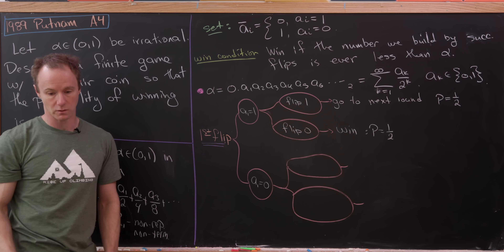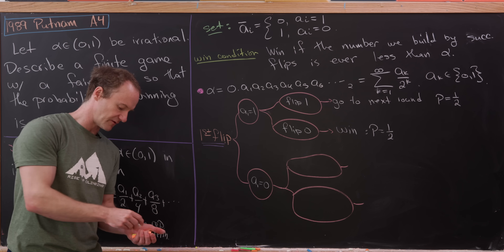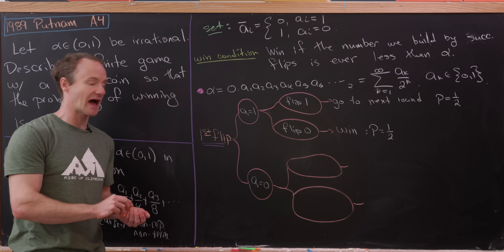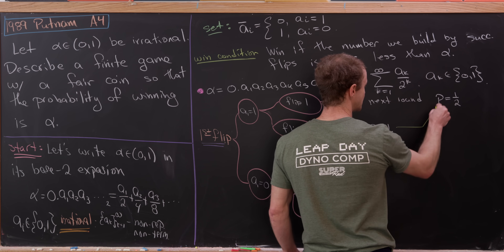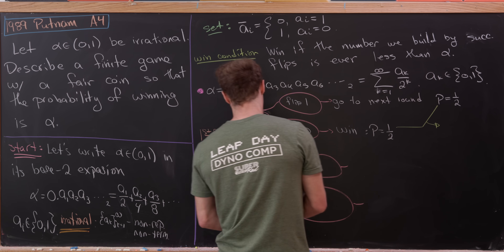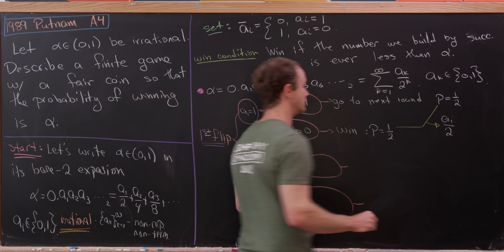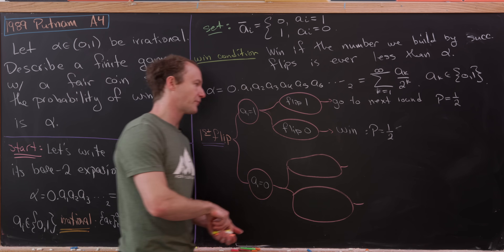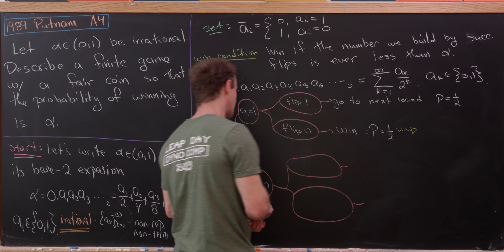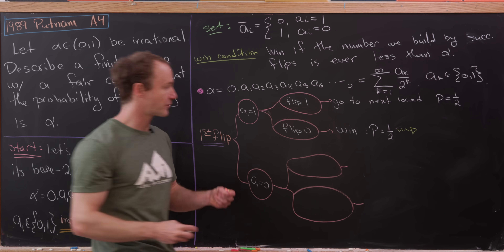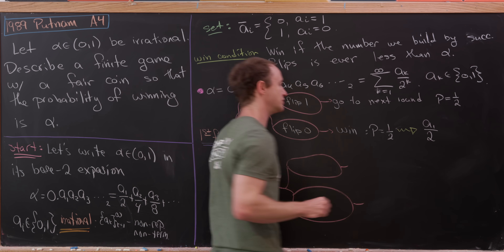Observe that the probability of winning equals 1/2 in the case A1=1 — which equals A1 over 2. So the probability of winning in the first flip, when A1 is 1, is exactly A1/2 = 1/2.